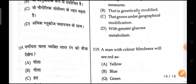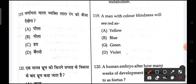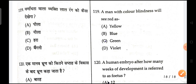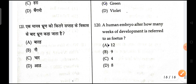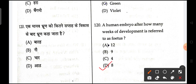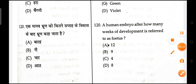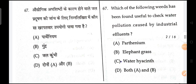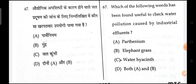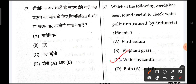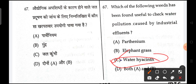Next is, a man with color blindness will see red as green. Next is, a human embryo after how many weeks is called a fetus? After eight weeks it is called a fetus. Also, which of the following weeds has been found to check water pollution? The correct answer is water hyacinth — correcting an earlier answer for that question.